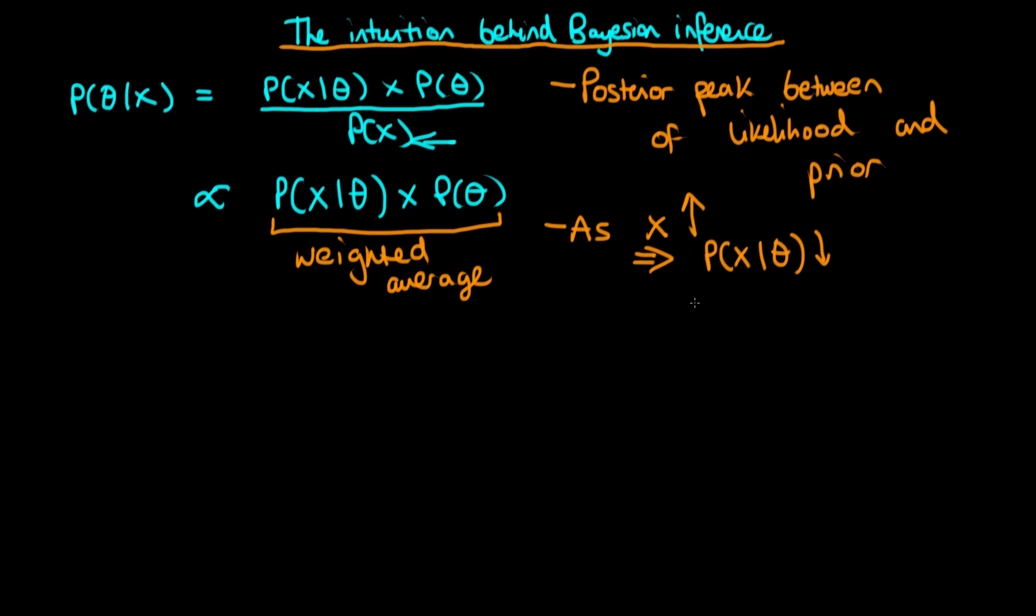And because it is becoming narrower, the posterior peak is then being dictated a lot more by the peak of the likelihood. Because any values of theta away from the maximum likelihood estimator, or a long way away from the maximum likelihood estimator, have very, very low likelihoods. And hence the posterior probability density there is very, very low.